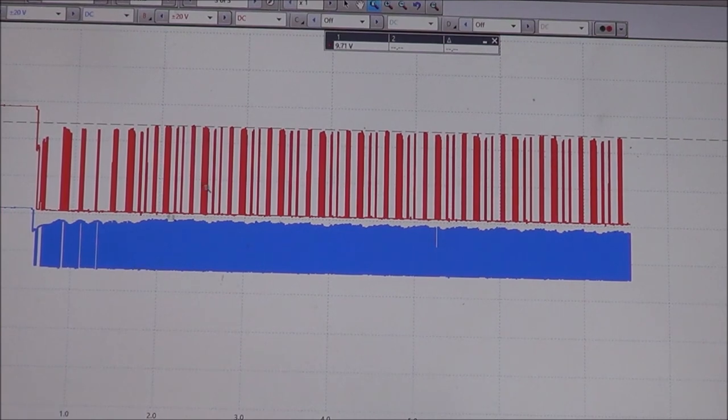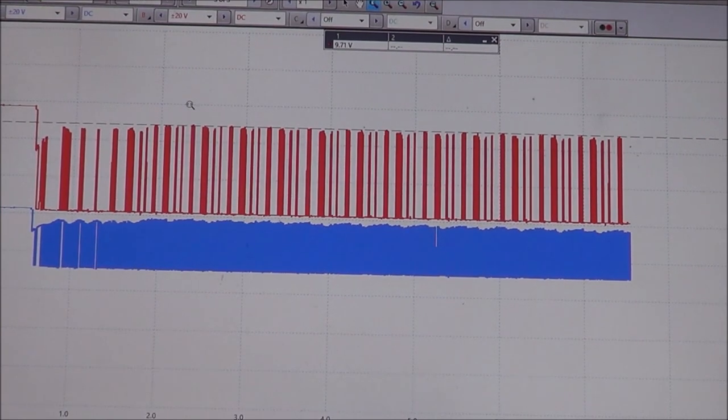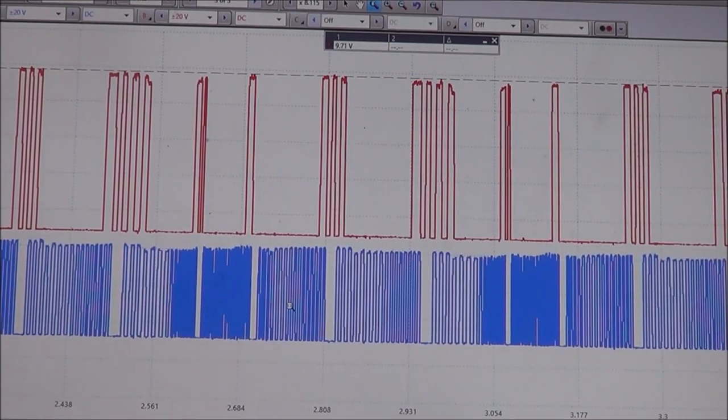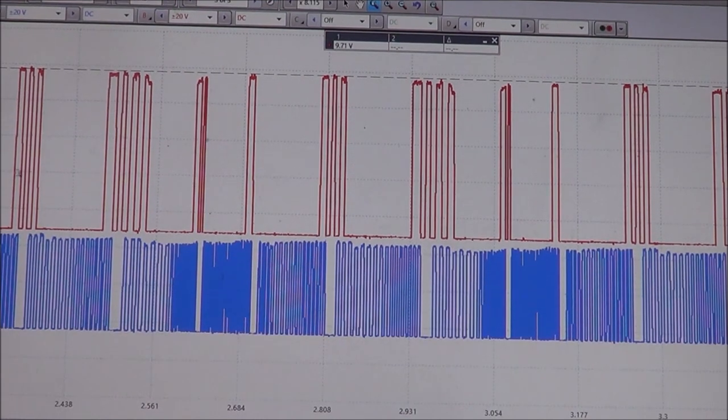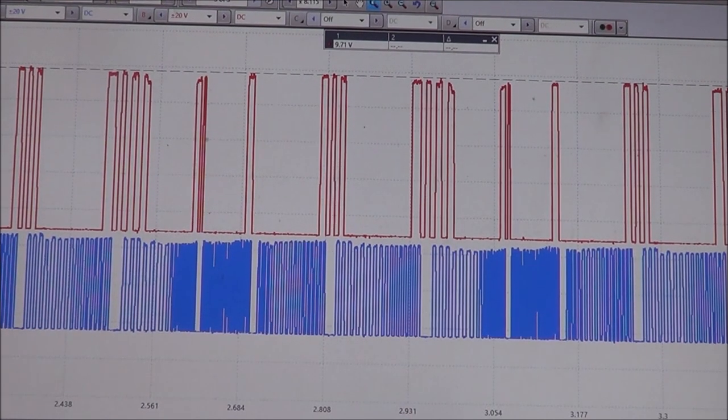And then we zoom in on this part right here. So the red trace would be my cam sensor signal, and my blue trace is going to be my crank sensor.